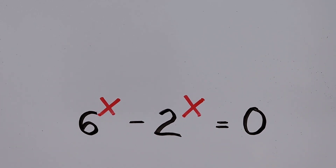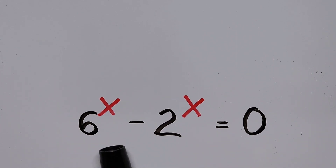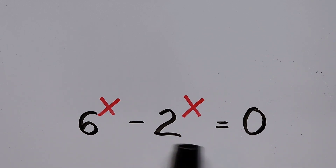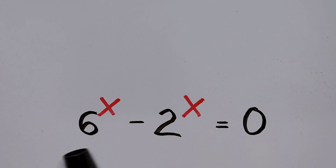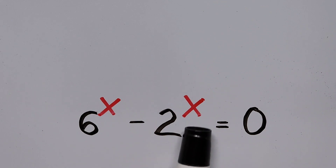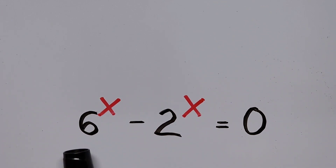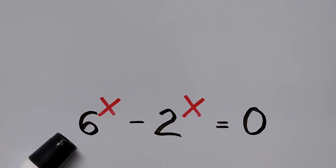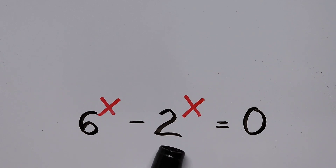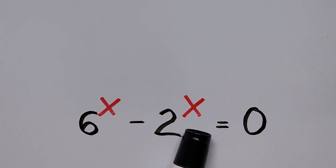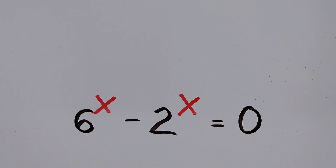Now let's start solving. At this point most of you viewers out there might already know the answer for the value of x, since the right-hand side is zero. So what exponent will yield the difference of these terms equal to zero? If you notice, 6 to the power of x minus 2 to the power of x — if you raise these to a power that yields 1, then the difference will result in zero.